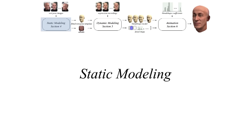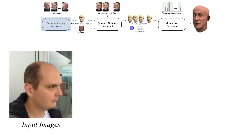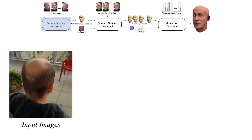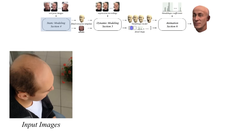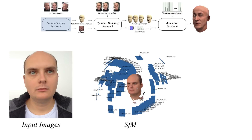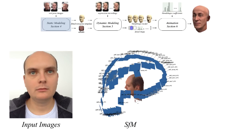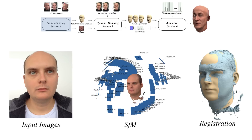The uncalibrated images recorded by the user are processed using a state-of-the-art structure from motion software to obtain a dense point cloud. We register a morphable face model to the point cloud to compute a template mesh that roughly matches the geometry of the user's face. The registration accuracy is then improved using non-rigid registration based on thin shell deformation.